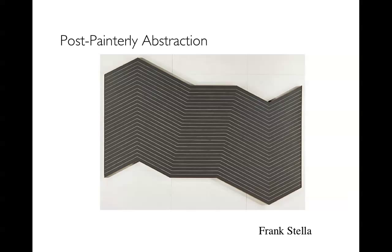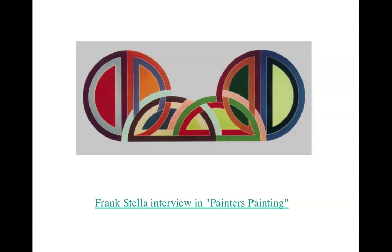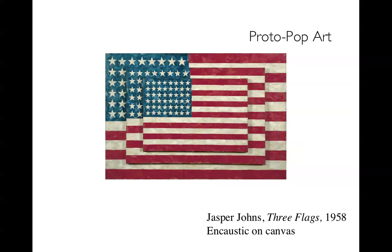There's an excellent interview with Frank Stella available on YouTube from a video called Painter's Painting — I'll post it on our web links. Also Jasper Johns, a proto-pop artist, still has some painterly quality but takes ready-made compositions, like the American flag or numbers, and sees what he can do with them in terms of the texture of the paint — rather than fighting out the battle on the canvas. Go ahead and find your online reading assignment, and I will meet you back here for the next one. Bye!